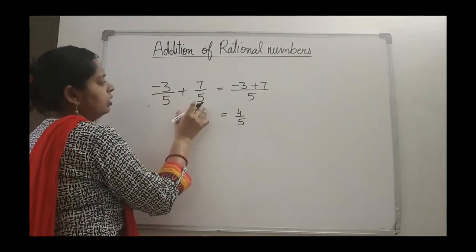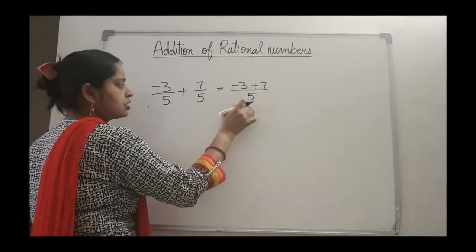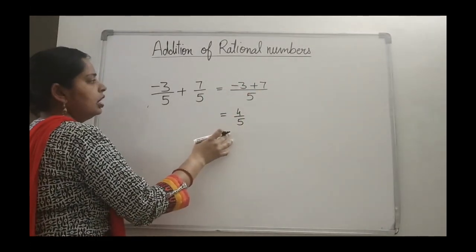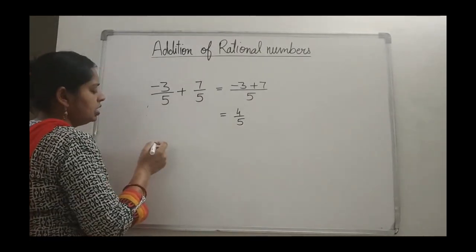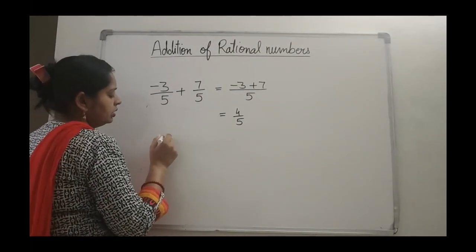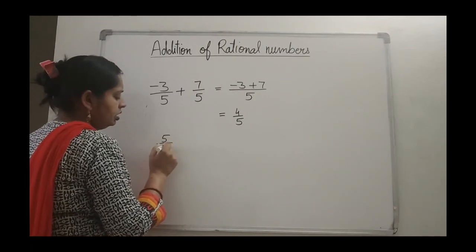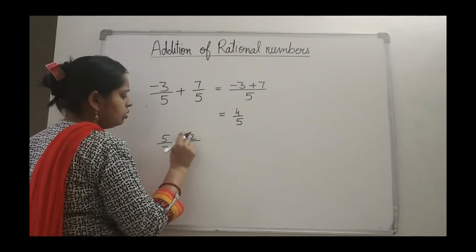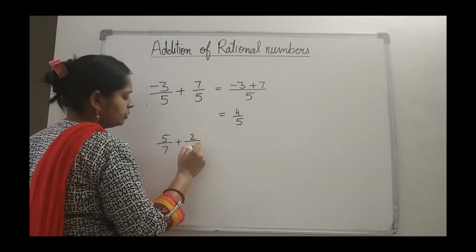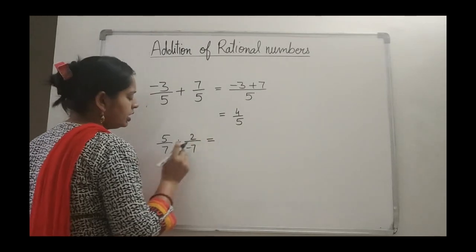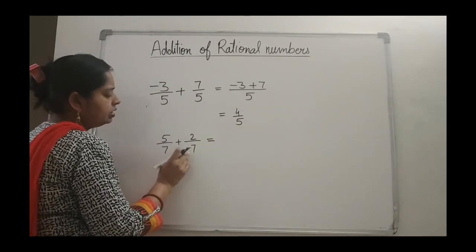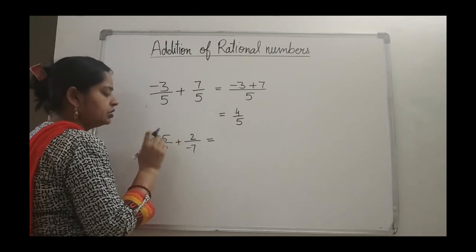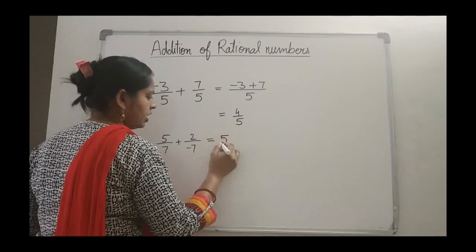So here you have used the rules of addition of fractions, and in the numerator when you are adding you got integers, so you have used the rules of addition of integers. Same in case if you are having 5 upon 7 plus minus 2 upon 7 plus minus 7. If you are getting a negative sign in the denominator, the first step is to make the denominator positive. So this question will change to 5 by 7.